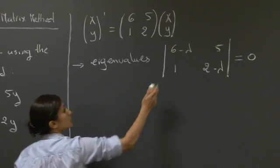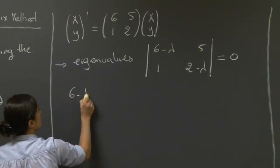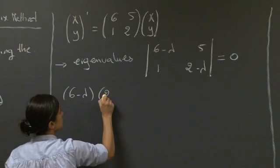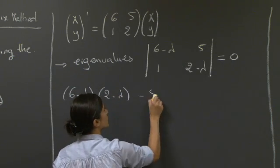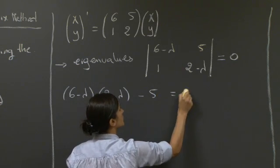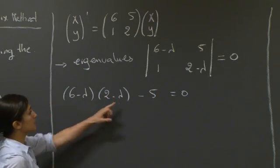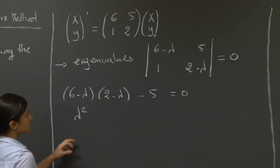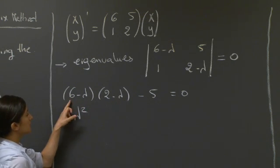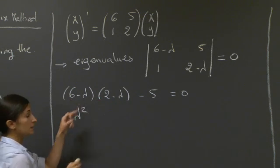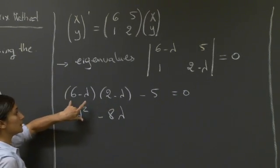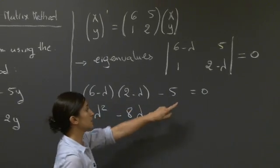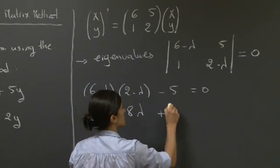So the determinant would be 6 minus lambda multiplying 2 minus lambda, minus 5 times 1 equals 0. So here the lambda dot lambda gives us a lambda squared. We have minus 6 lambda minus 2 lambda, which would be minus 8 lambda. And then we would have 2 dot 6, which is 12, minus 5, which gives us 7.